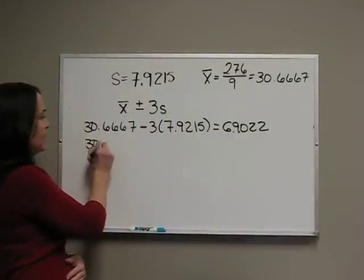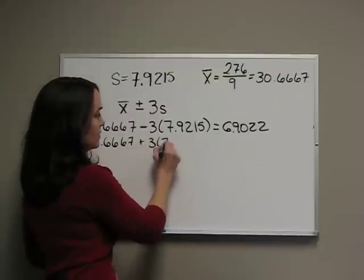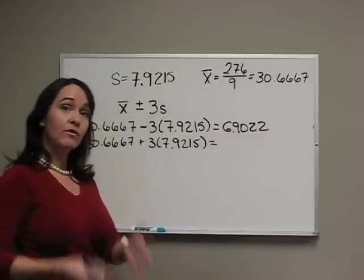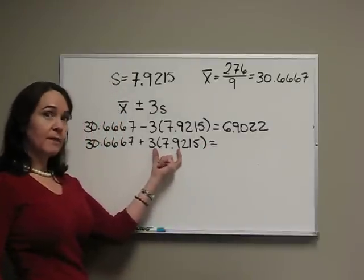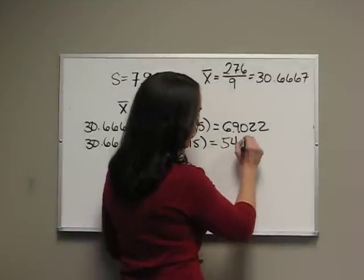Now we're ready to do the same thing except add. This will give us our upper bound. So again, multiply, then add, and you should get 54.43.